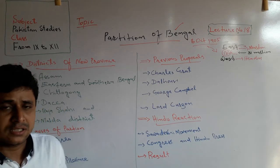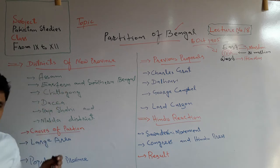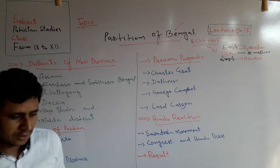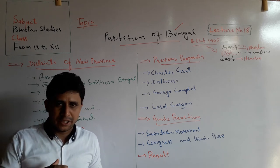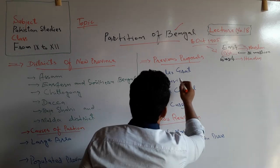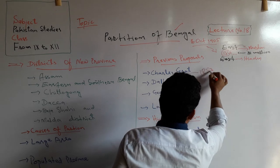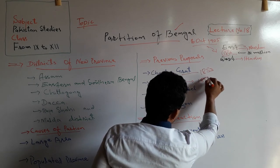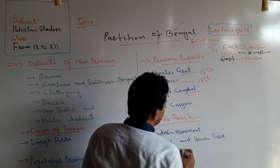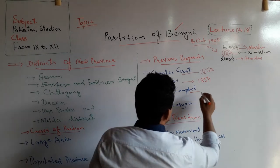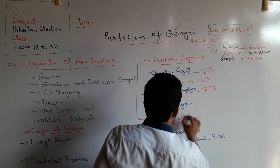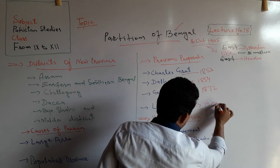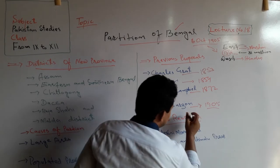East Bengal was a new province created when Bengal was divided. Many British governors and officials presented the idea to partition it. Charles Grot in 1853 suggested dividing it, Dalhousie said to divide it in 1854, and George Campbell, the Lieutenant Governor, also said to divide it in 1872. Lord Curzon finally divided it in 1905. Lord Curzon was a Viceroy of British India.